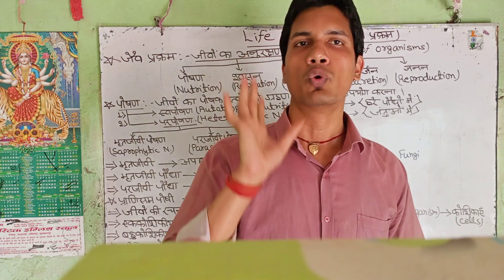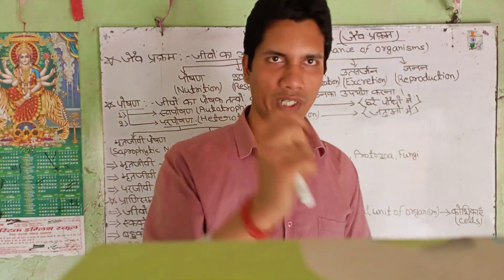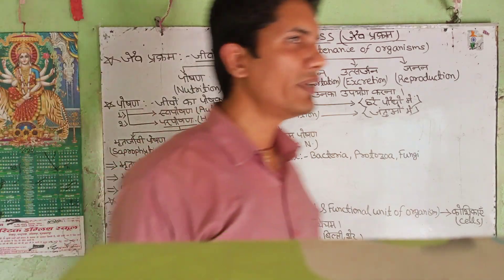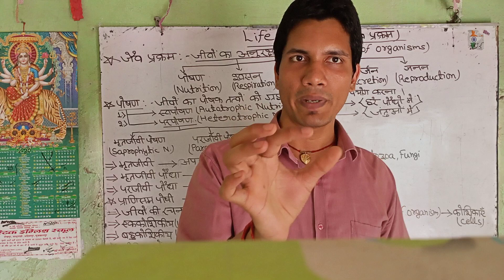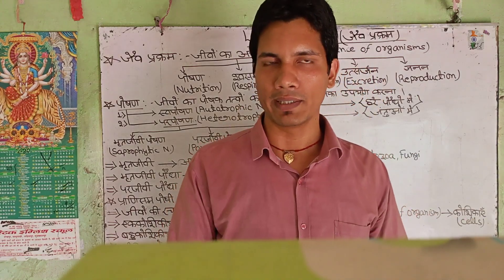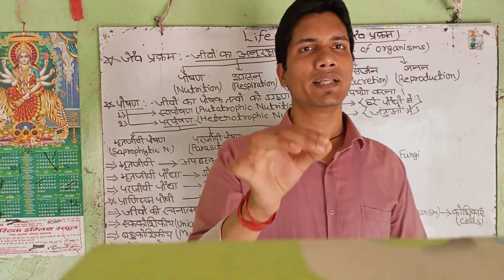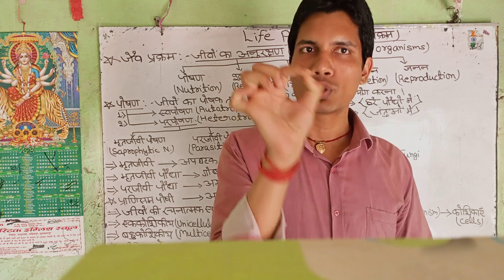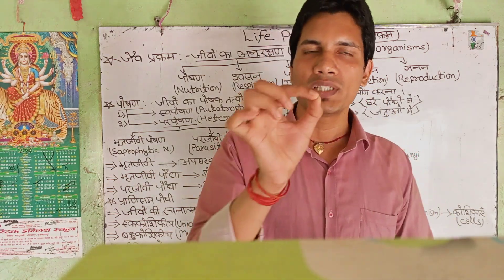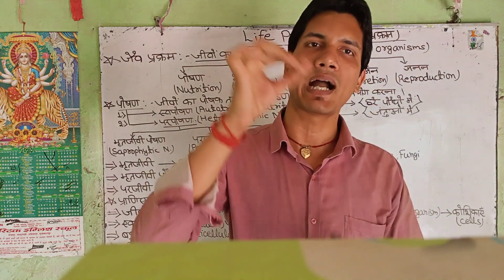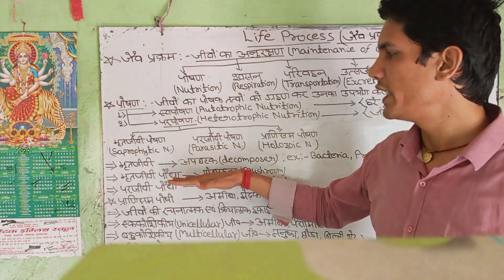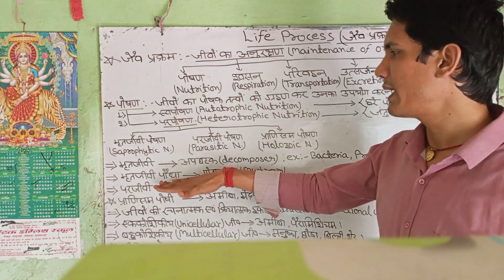This is called Prani Poshan or Holozoic nutrition. Decomposers, called Apghatak in Hindi, break down dead matter. For example, when a small animal like a cat dies and is left, insects and other decomposers come and break it down. These decomposers save the environment by recycling nutrients.